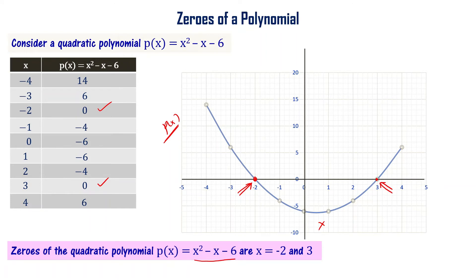Minus 2 and 3 are the zeros of the given polynomial p(x). Understood.